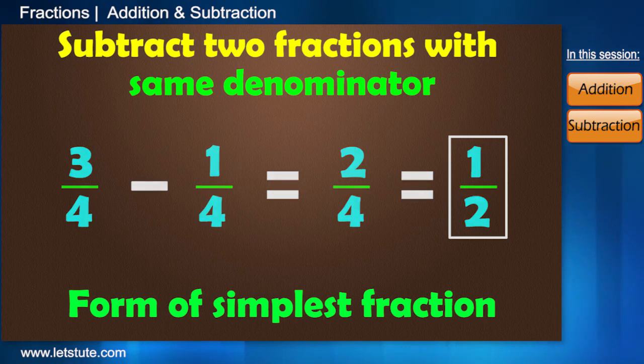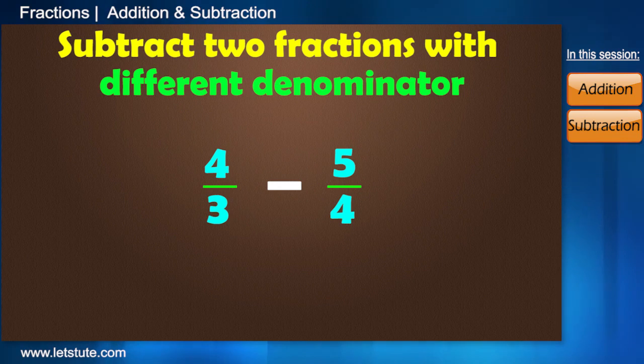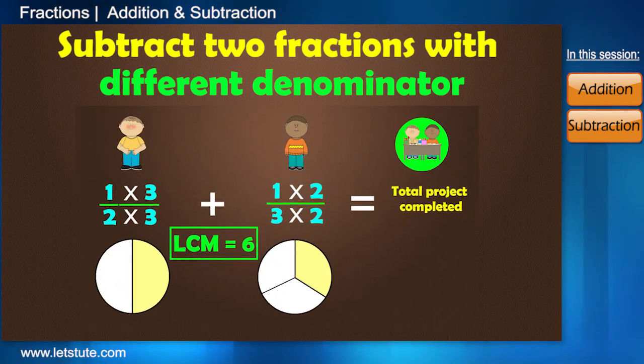But, when you have fractions like 4 by 3 and 5 by 4, how will you subtract them? So, before deciding anything, we will make the denominators of both the fractions same. Same like we did before adding two different fractions with different denominators.